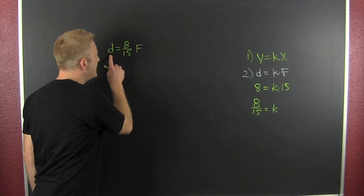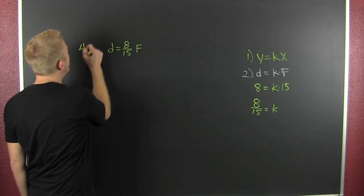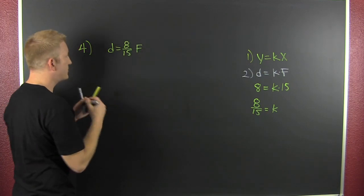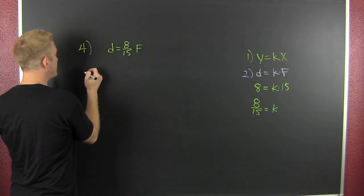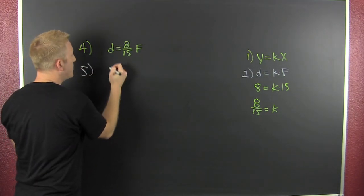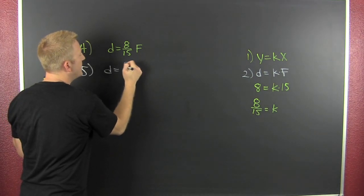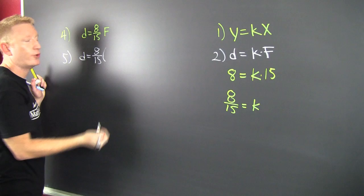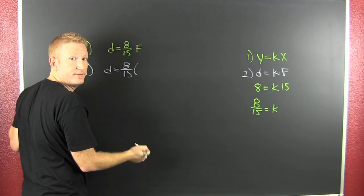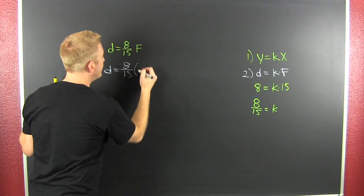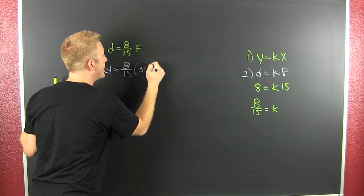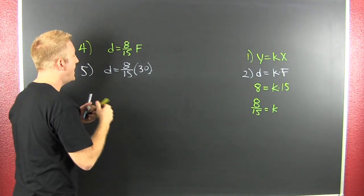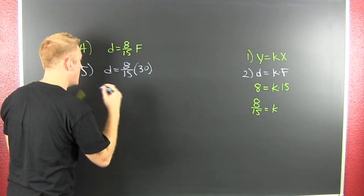After the comma, they ask: how much will a force of 30 stretch the spring? Do we put 30 into the distance or the force? That's the force. Step five — the last one — answer the question. They want to know how much distance will result from 30 pounds of force. So we plug in F = 30.